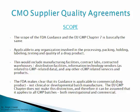The scope of the FDA guidance and EU GMP Chapter 7 is basically the same. It's applicable to any organization involved in the processing, packing, holding, labeling, or testing quality of a drug product. This includes manufacturing facilities, contract labs, warehouses, distribution facilities, IT vendors that deal with GMP-related data, and any other GMP-related services and products.